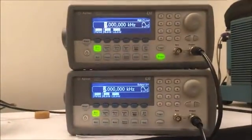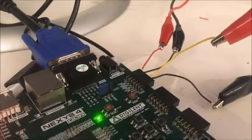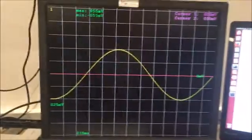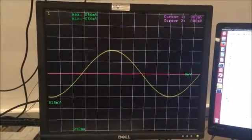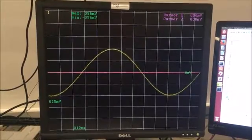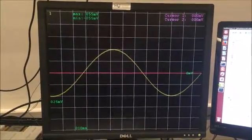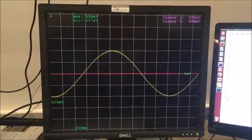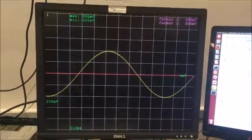The FPGA is currently connected to two function generators through its auxiliary analog inputs. At this moment only the first function generator is turned on and it's outputting a sine wave with a frequency of 1 kilohertz and an amplitude of 100 millivolts peak to peak.